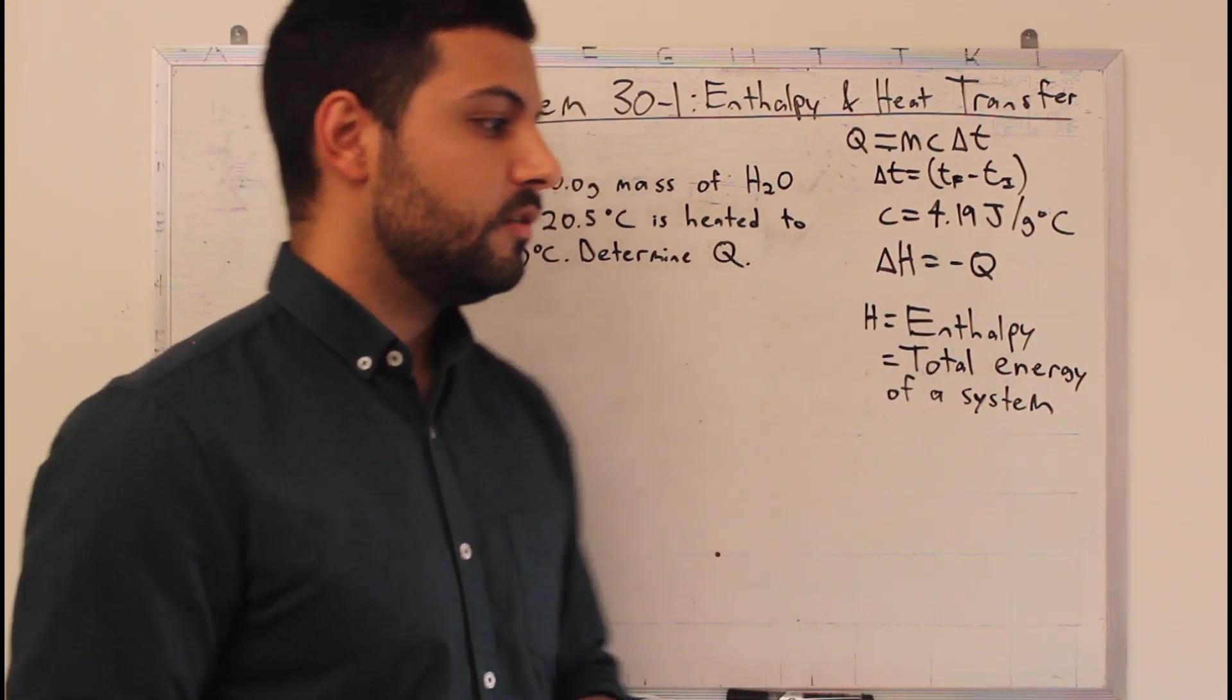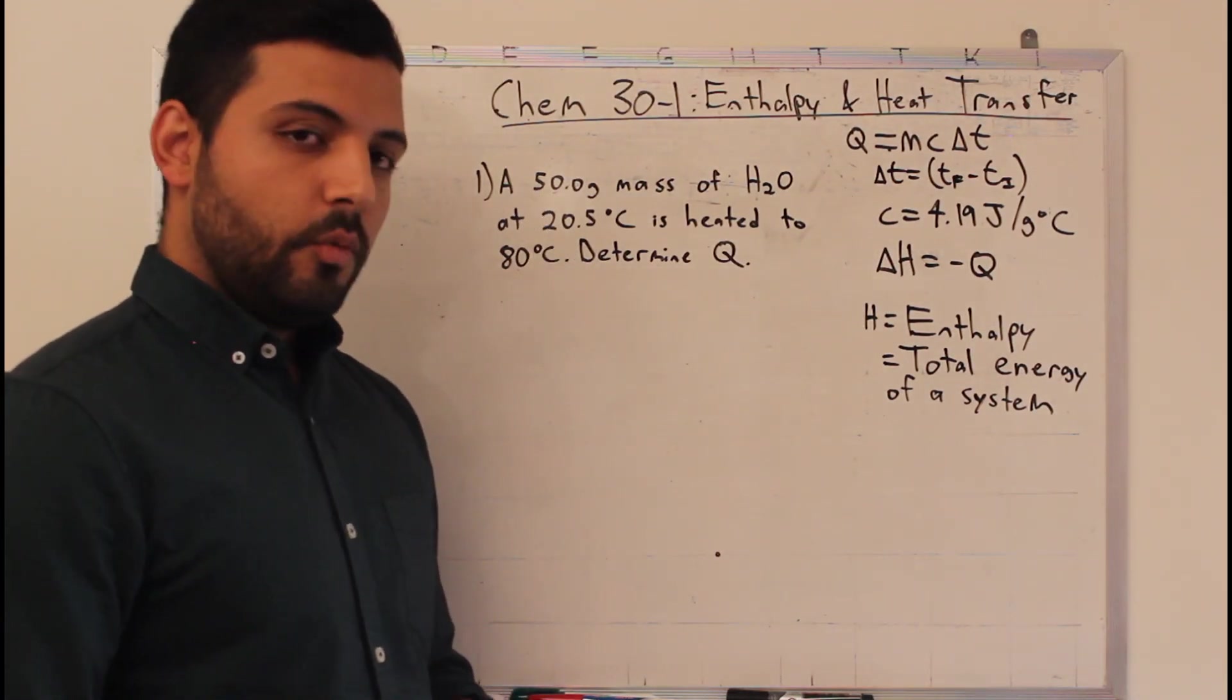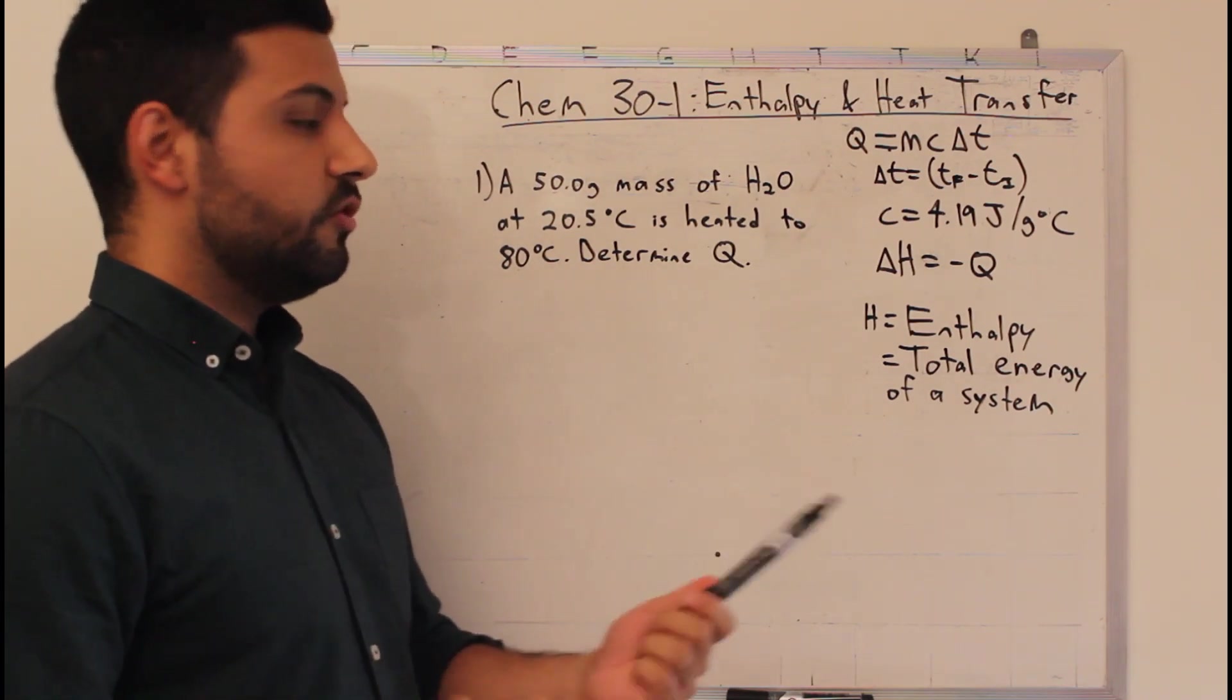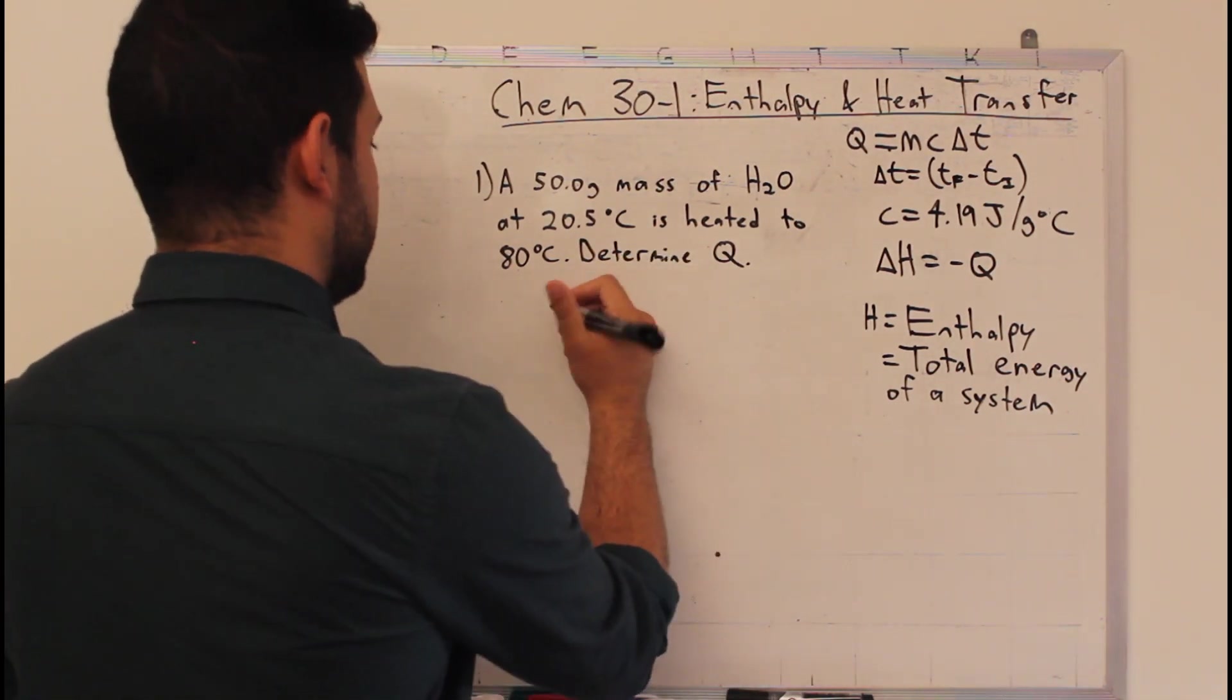So we can go through a couple examples. Example one: a 50 gram mass of water at 20.5 degrees Celsius is heated to 80 degrees Celsius, let's determine Q. This is pretty straightforward. We have all of our units here, we just got to plug them into the equation.